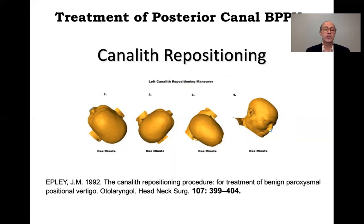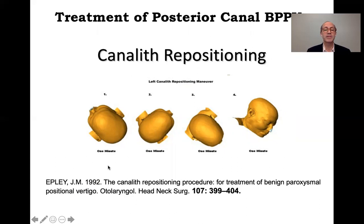Epley presented his findings as an academy course and was clearly a pioneer well ahead of his time. The canalith repositioning procedure uses the corners of the room as a guide: position one to the upper left corner, position two to the upper right corner, position three to the lower right corner, and then sitting up. You don't have to hang the head below horizontal but it is an enhancement.